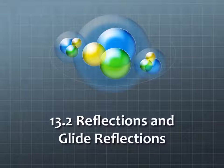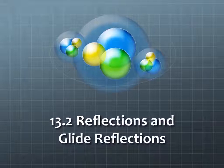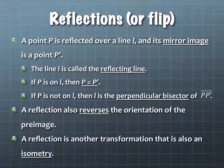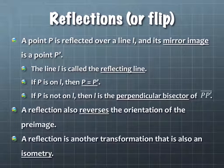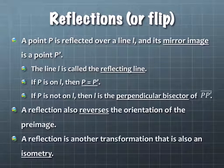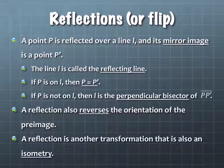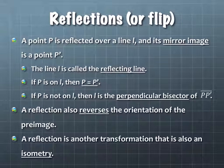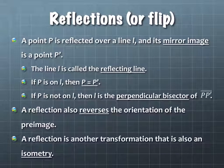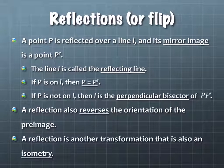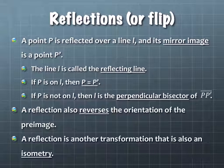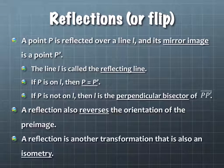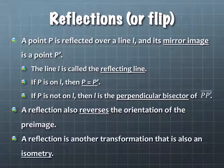So today we're going to move on to the next type of transformation, which is called a reflection. So a point P is reflected over a line L, and when that happens, its mirror image is a point P prime. The line L is called the reflecting line. If the point P is actually on the reflecting line, then it stays the same. And if P is not on the line L, then L is the perpendicular bisector of segment P, P prime.